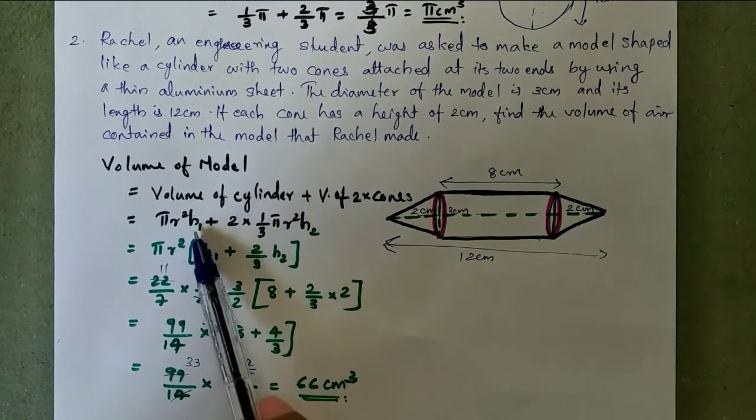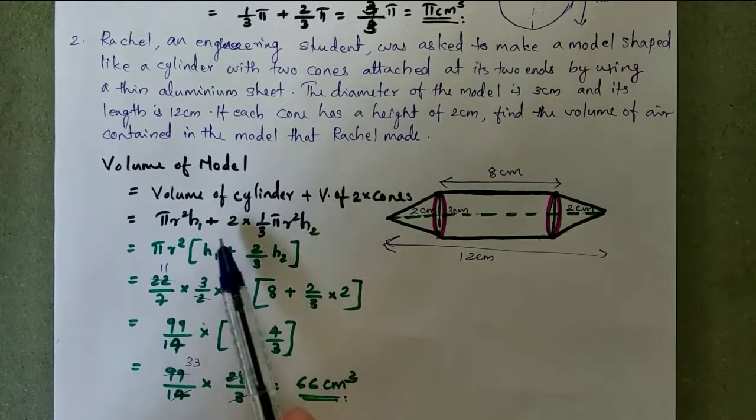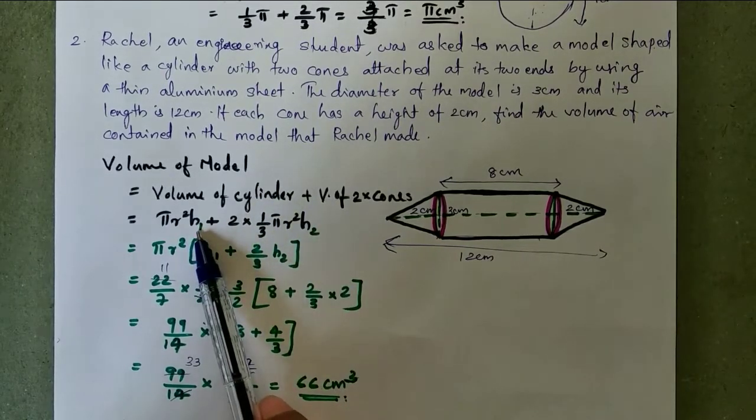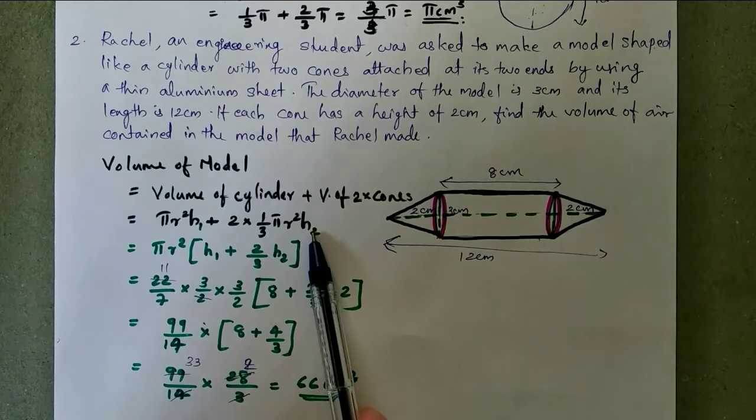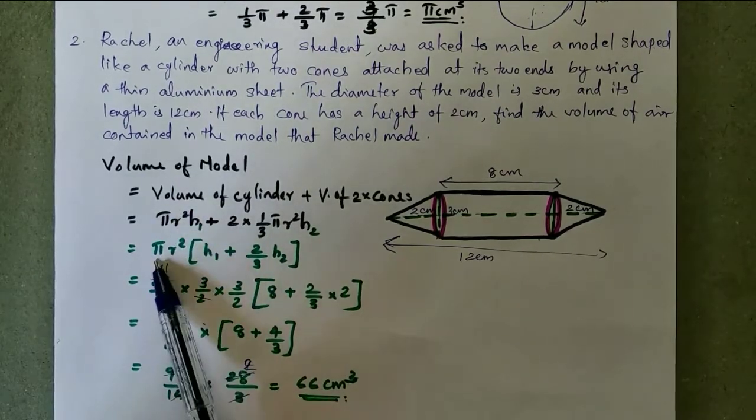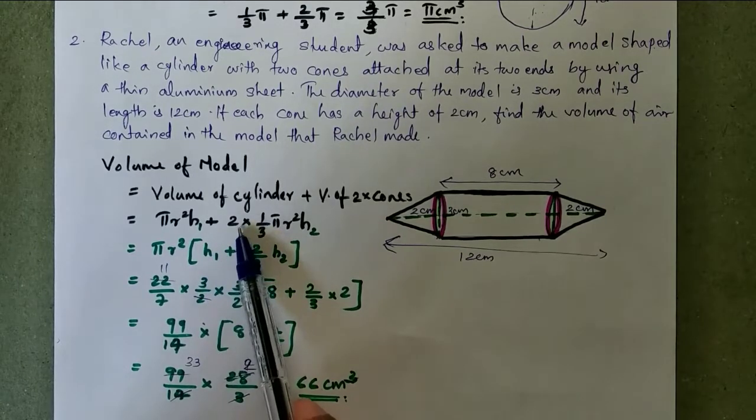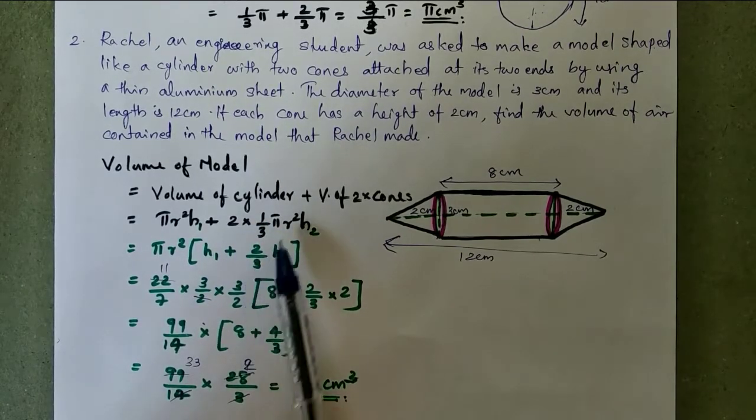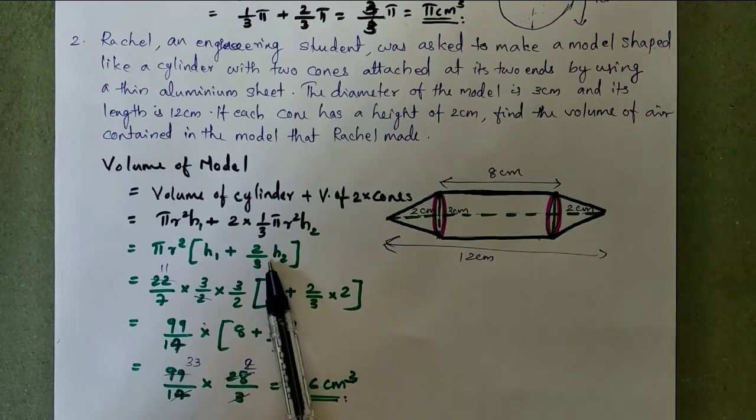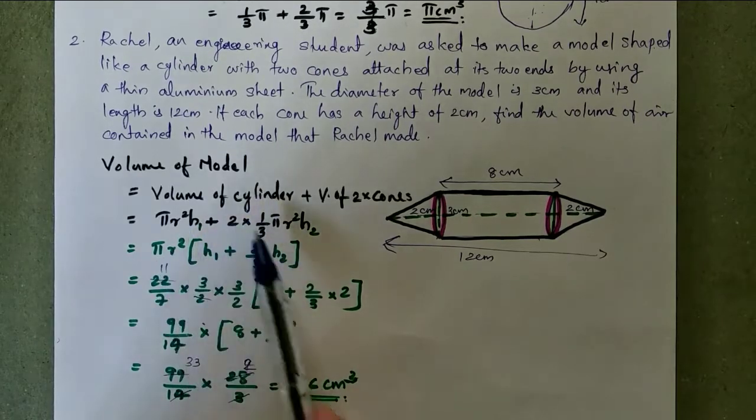Sometimes the radius are different cases, but here the radius are same, so r² r², but h₁ and h₂ both are different. So I denote one is h₁ and the second one is h₂. And we have the common term π r². π r² taken outside, so here h₁ plus 2 into 1/3, 2/3, and h₂.